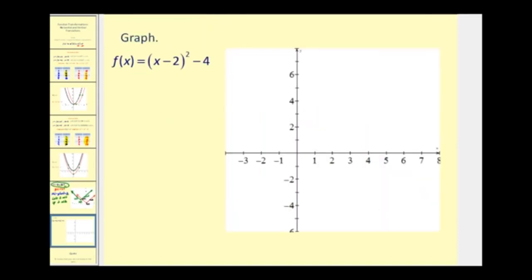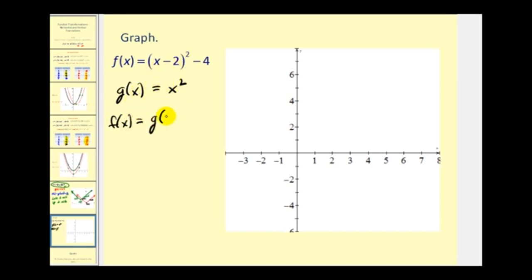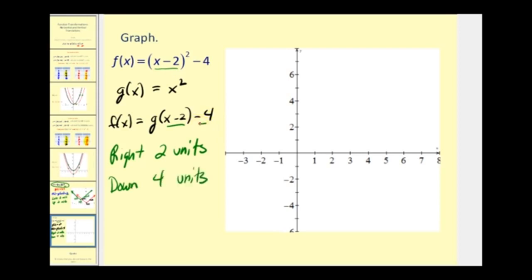Let's try another example. For f of x equals the quantity x minus 2 squared minus 4, we recognize the parent function as g of x equals x squared. We can write f of x as g of x minus 2 minus 4. Subtracting 2 from the input — the x minus 2 — shifts the graph right 2 units. Then subtracting 4 from the function value shifts it down 4 units.